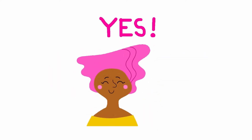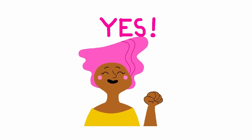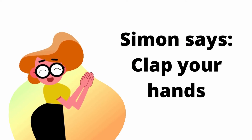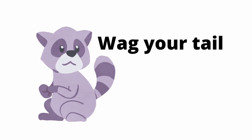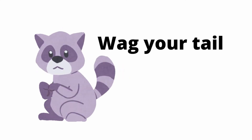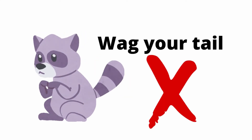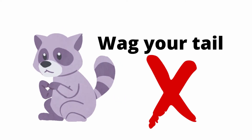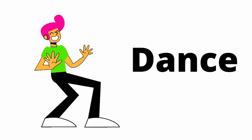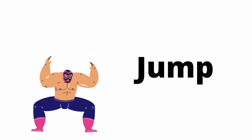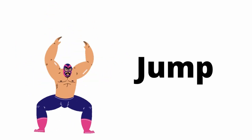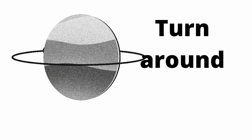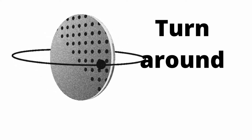First thing we need to do is get ready. Simon Says, clap your hands. Clap your hands, everyone. Now wag your tail. Oh, I didn't say Simon Says. Simon Says, let's try again. Simon Says, dance. Are you dancing? Great. Simon Says, jump. Jump. Now turn around. Oh, I didn't say Simon Says.